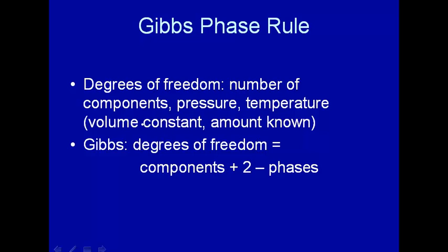And assumed, tacitly assumed in this, is that the volume is constant of your system. And the amount you have for pure substance doesn't really matter, but for composition of multi-component systems, you know that amount. So let's figure out how Gibbs got this relation. The degrees of freedom is components plus two minus phases.